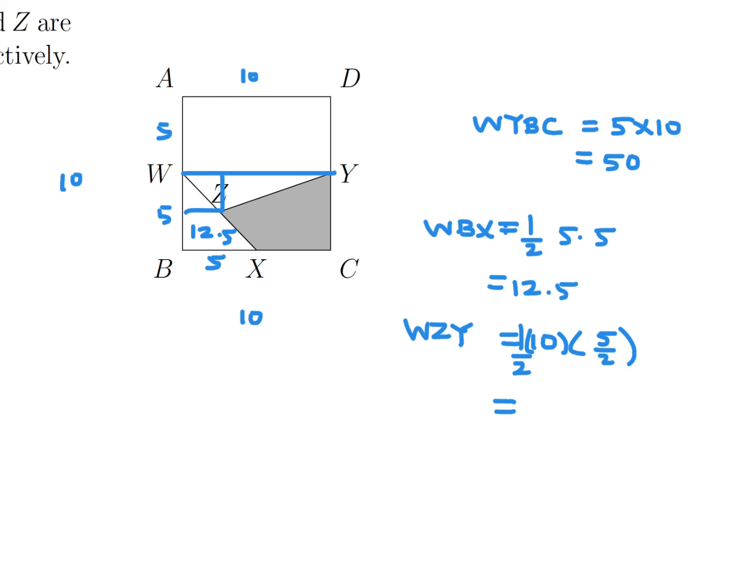So that looks like 50 over 4, which is 12.5. So finally, to get that C, X, Z, Y quadrilateral, it would be that 50 minus that 12.5 minus that 12.5, and that is 25.